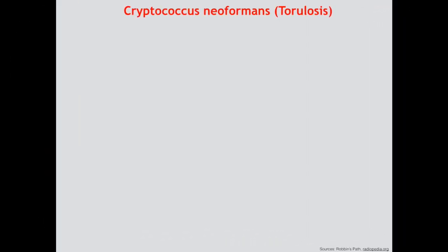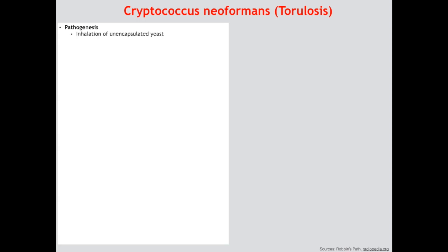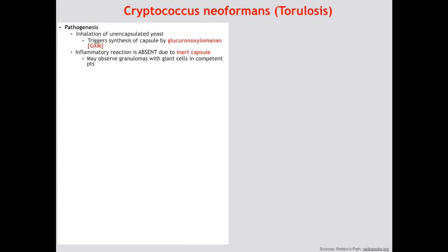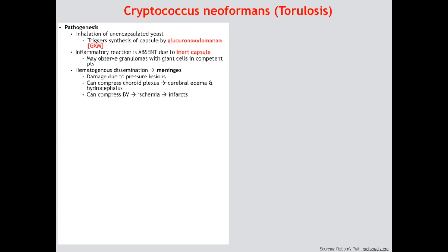For cryptococcosis, the pathogenesis begins with inhalation of the unencapsulated yeast — the basidiospores — which triggers capsule synthesis by GXM. The inflammatory reaction will be absent not only because the patient has AIDS but also because his capsule is inert. Once inhaled he spreads via the blood to the meninges where he replicates wildly, and the damage is due to sheer numbers — pressure lesions. These lesions can compress the choroid plexus leading to cerebral edema or hydrocephalus, and can also compress a blood vessel leading to ischemia and infarction.